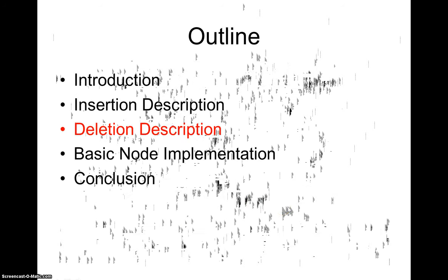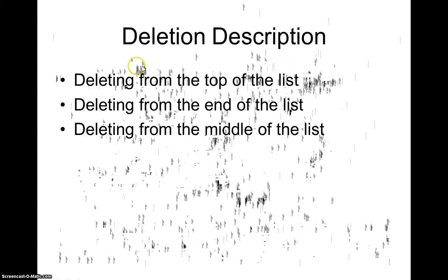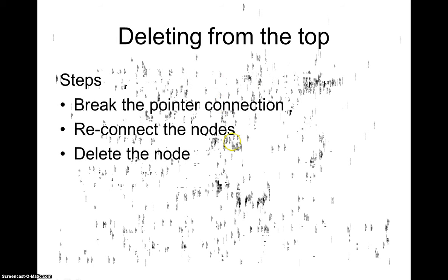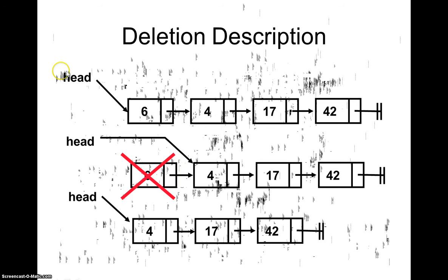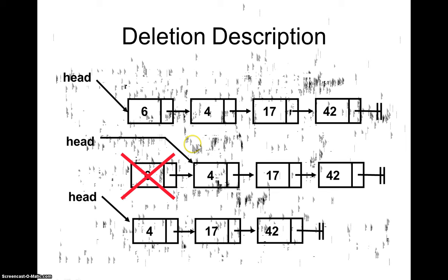Deletion is also straightforward with three cases: delete from the top, end, or middle. To delete from the top, consider an existing linked list with a head and a tail pointing to null. To remove the first node, we reset the head to point to the second node. The original first node becomes a dangling node — it still exists in memory but is no longer accessible because the head no longer points to it.